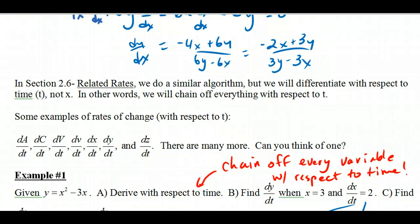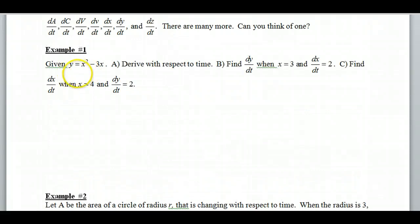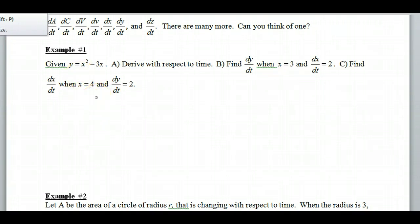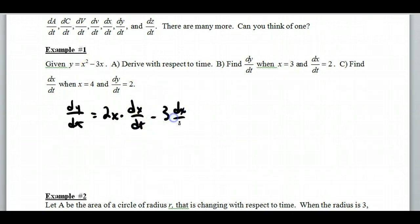Example 1: given y = x² - 3x, we want to differentiate with respect to time. So I'm going to take the derivative as I normally would, but chain off everything with something over dt. The derivative of y gives dy/dt, equal to the derivative of x² which is 2x, chained off as dx/dt, and then minus 3 dx/dt. So we're doing everything with respect to t and chain off all those things.